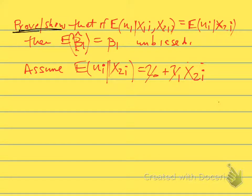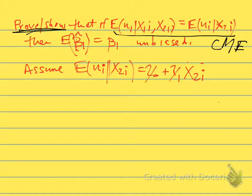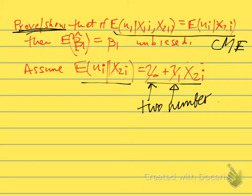Let's go ahead and prove that if the conditional mean independence assumption — usually written CMI — holds, then the expected value of β̂₁ that we estimate will equal β₁; that is, it will be unbiased. We start by assuming that the error term's expected value depends linearly on x2. So γ₀ and γ₁ are just two constant numbers. We'll do this to make the proof easier; we could do the proof even if it weren't a linear function of x2.